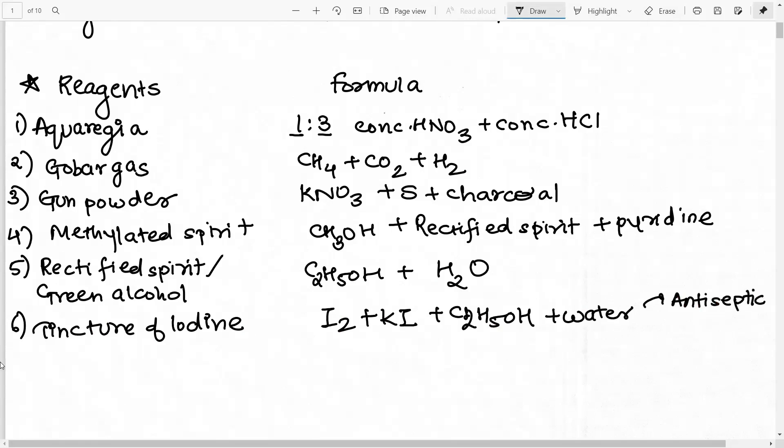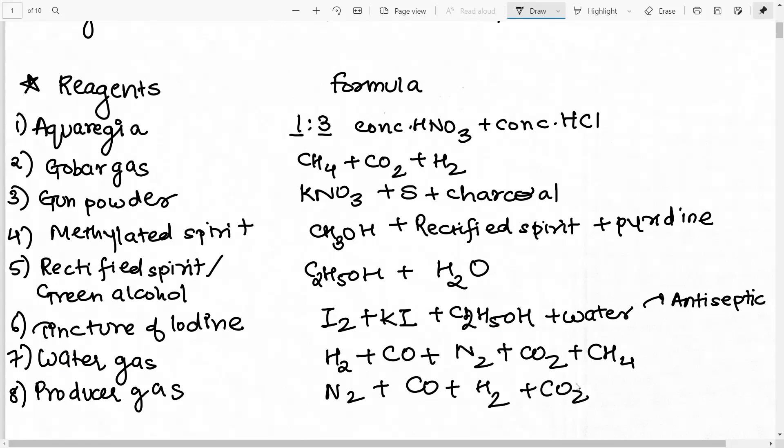Next you have something called as the tincture of iodine. So now what is tincture of iodine? It is basically a mixture of I2, then potassium iodide, ethanol and water. It is a very important commercial product basically used as an antiseptic. Next you have water gas. Now what is the composition of water gas? It is basically H2 plus carbon monoxide plus N2 gas plus CO2 gas plus methane. This is basically the composition of water gas. Then next you have the producer gas. What is the composition of producer gas? N2 plus carbon monoxide plus H2 plus CO2. Producer gas is basically used as a fuel. Water gas is used in the production of ethanol.